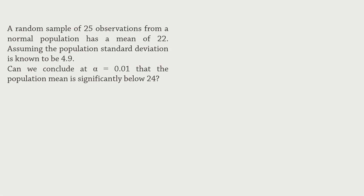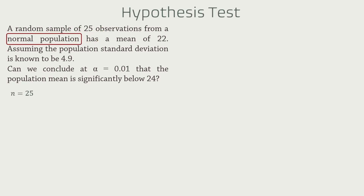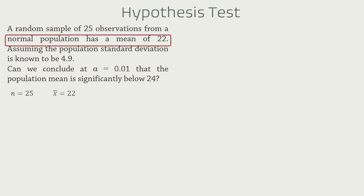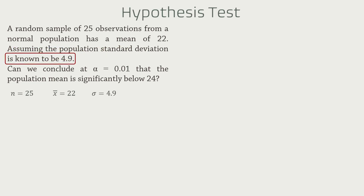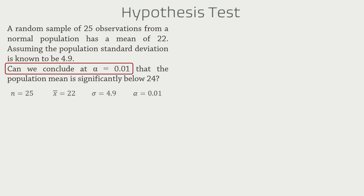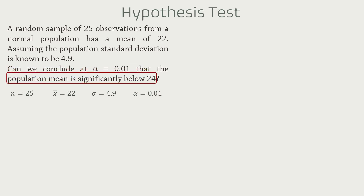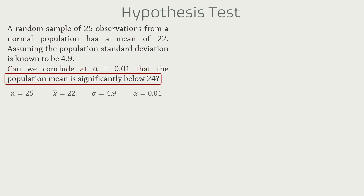A random sample of 25 observations from a normal population has a mean of 22. Assuming the population standard deviation is known to be 4.9, can we conclude at alpha equals 0.01 that the population mean is significantly below 24?